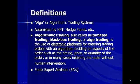Here are algos or algorithmic trading systems. One definition is that algorithmic trading — also called automated trading, black box trading, or algo trading — uses electronic platforms for entering trading orders with an algorithm. An algorithm is a method of solving a problem that decides on aspects of the order, such as timing, price, and quantity, in many cases initiating the order without human intervention. In forex, these are known as expert advisors. The users are the high-frequency traders, hedge funds, and mutual funds, because about 80% of the market is run by these algo trading systems.